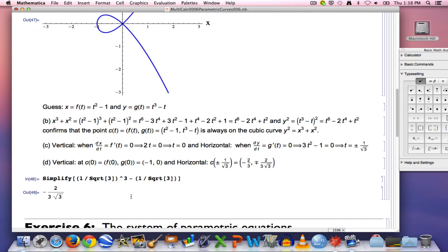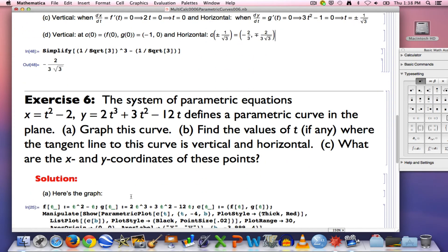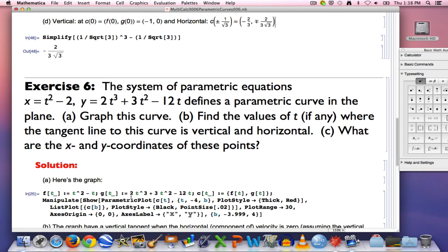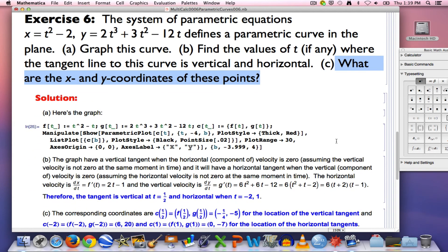Here's your exercise. I made your exercise easier this time, as opposed to what I've done in the previous times. In this case, I don't have a given cubic curve for you to parametrize, I'm just asking you to take this system of parametric equations and graph it, then find the values of t where the tangent is vertical and horizontal, and then find the x and y coordinates of these points. Try that right now. Pause the video. When you're back, I'll show you the work, the answer.